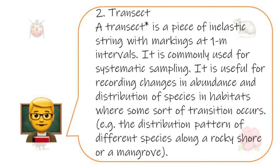The second tool we can use is the transect. A transect is a piece of inelastic string with markings at 1 meter intervals. It is commonly used for systematic sampling. It is useful for recording changes in abundance and distribution of species in habitats when some sort of transition occurs — for example, the distribution pattern of different species along a rocky shore or a mangrove.